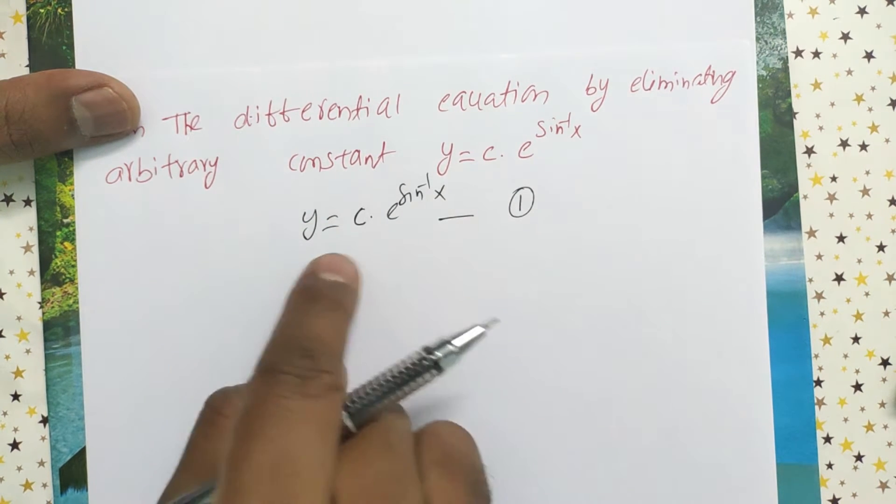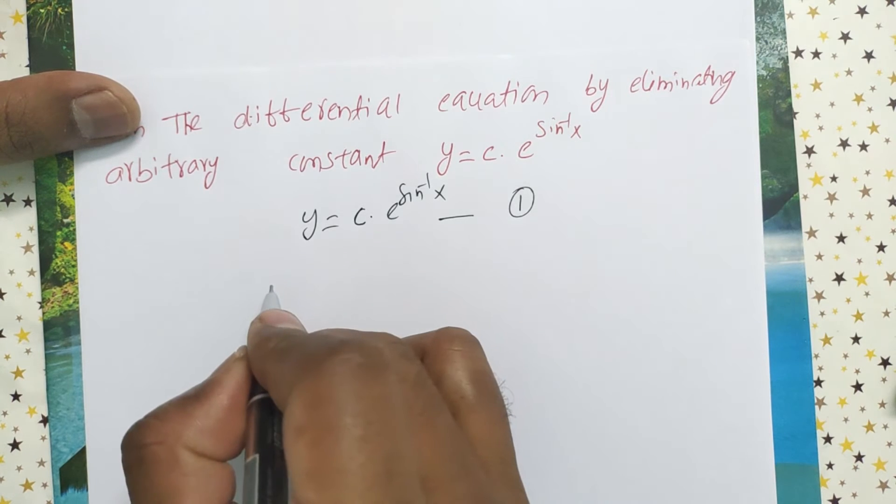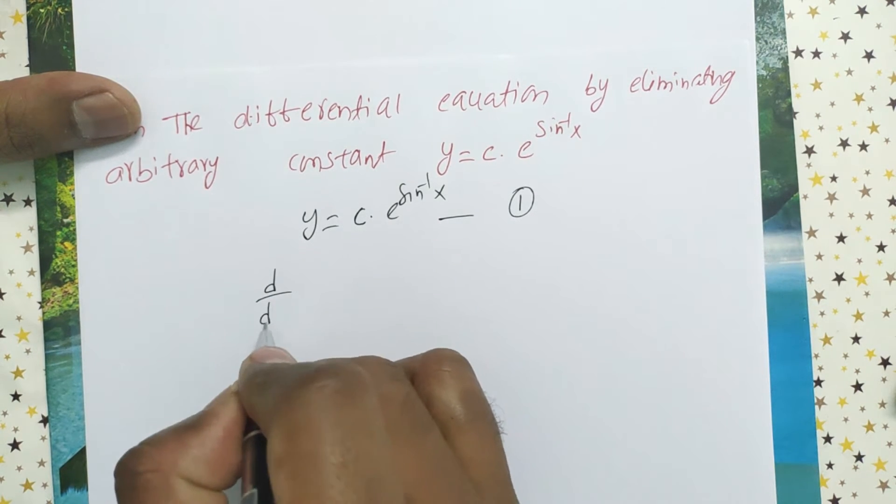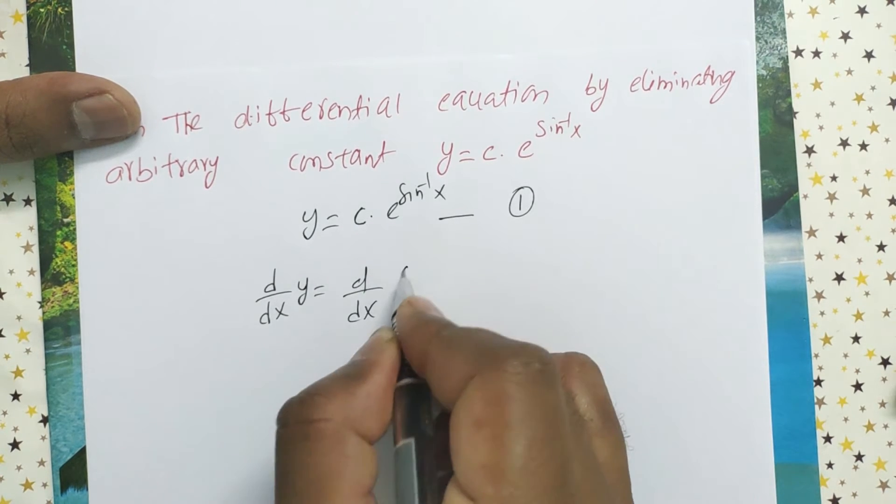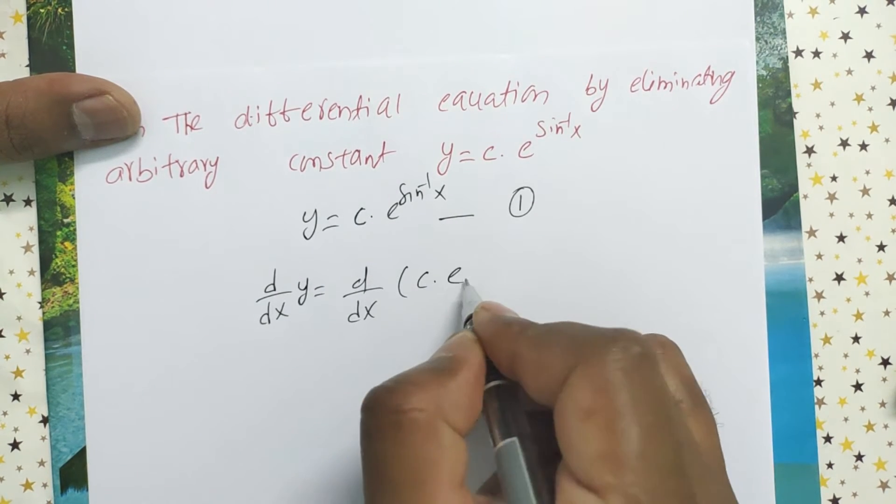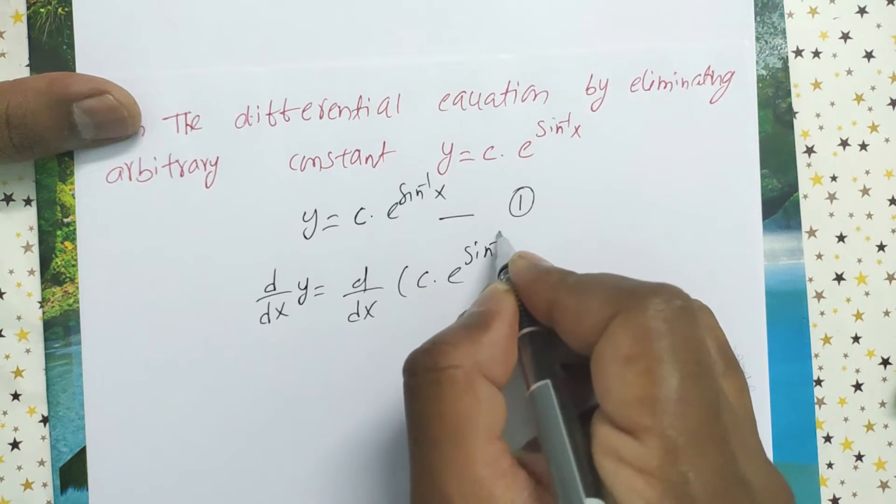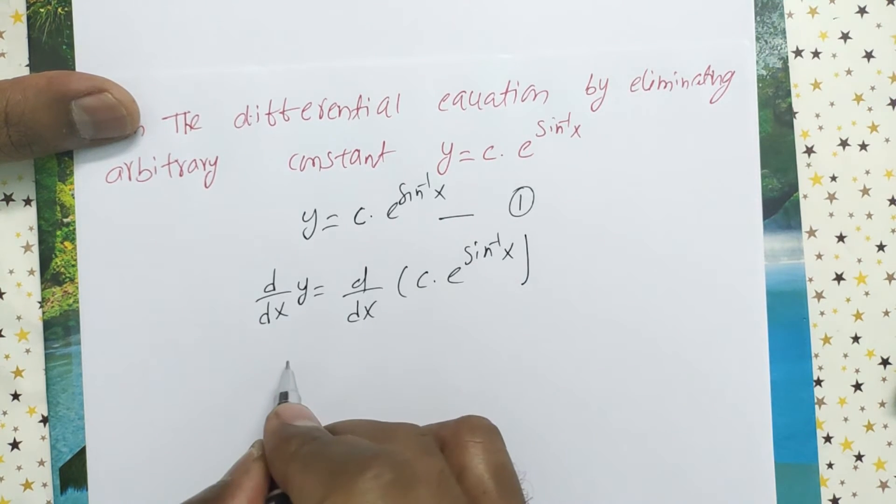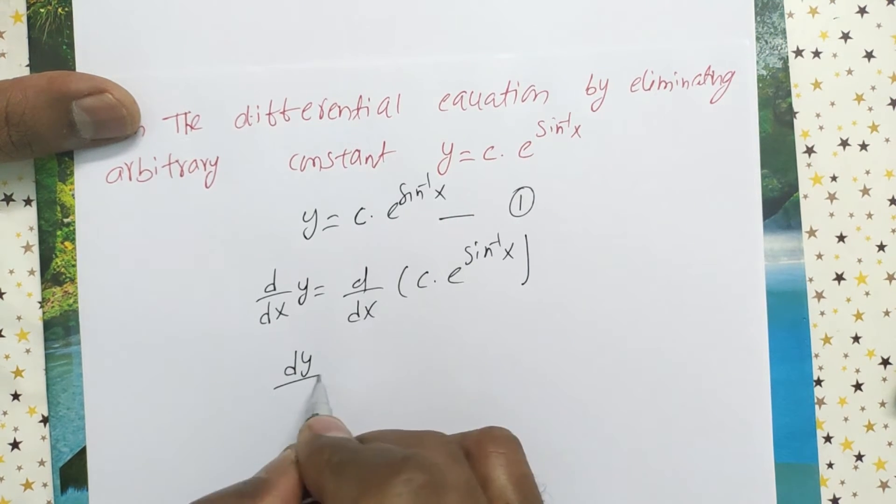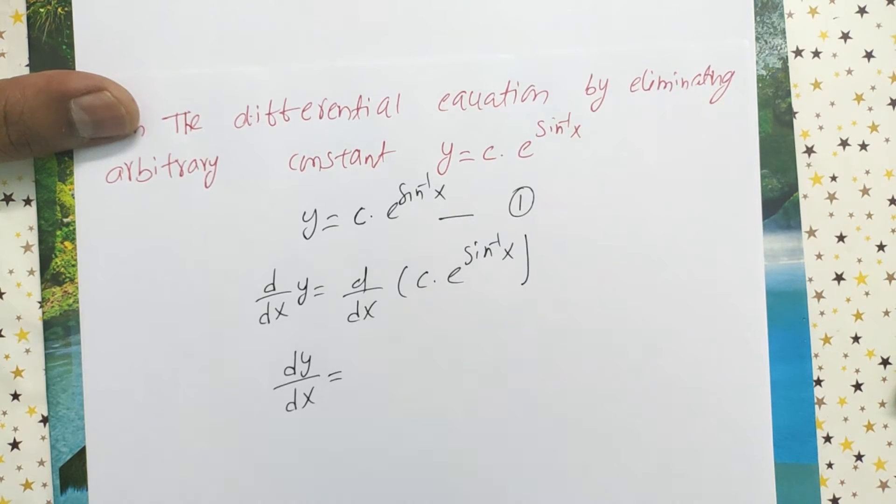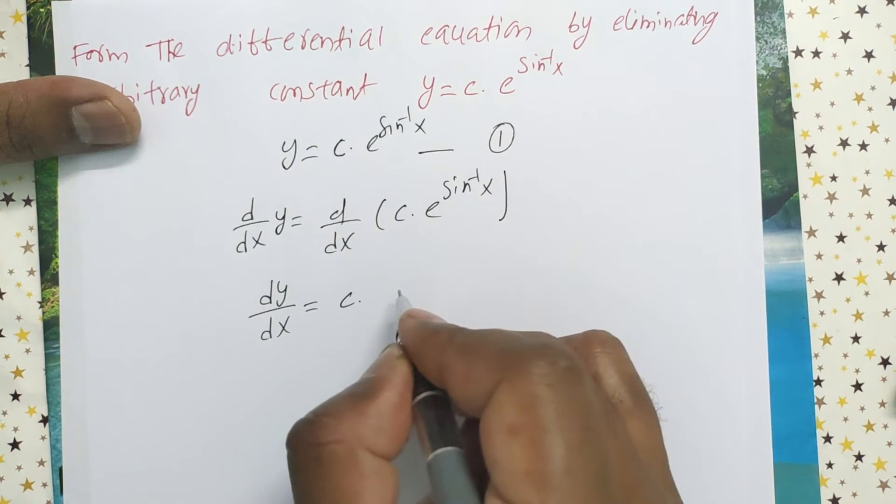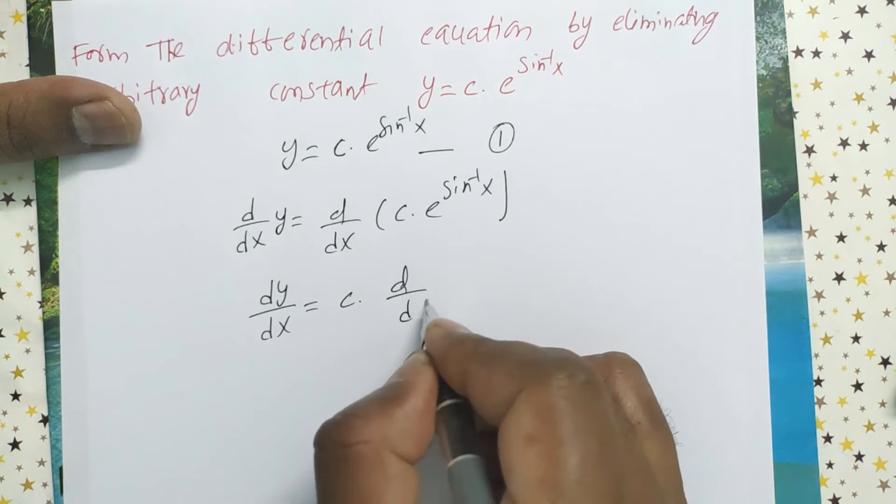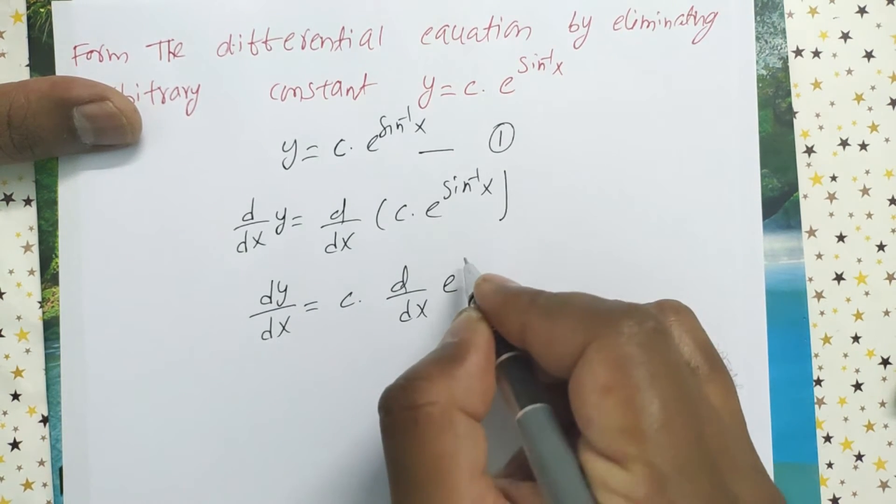Differentiate equation 1 with respect to x. Then it becomes d by dx of y equals d by dx of c times e to the power sine inverse x. Now dy by dx equals, if c is a constant, bring it outside: c times d by dx of e to the power sine inverse x.